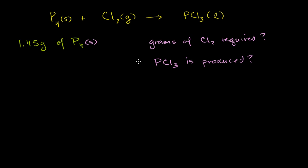Before you do any of these stoichiometry problems — that's just a fancy word for problems where you need to figure out how much of a certain reactant is required or how much of a product is going to be produced — you have to make sure that your equation is balanced.